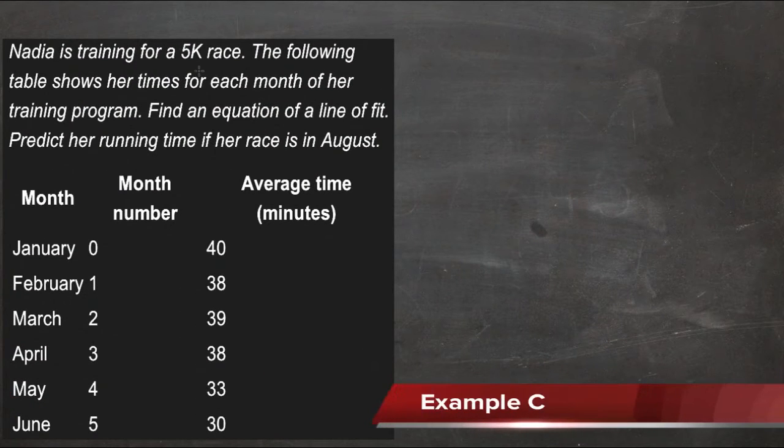Example B here, we have some data about Nadia, who's training for a 5K race. The table shows her times for each month of her training program, and we need to find an equation for a line of fit, and then predict her running time if her race is actually in August.